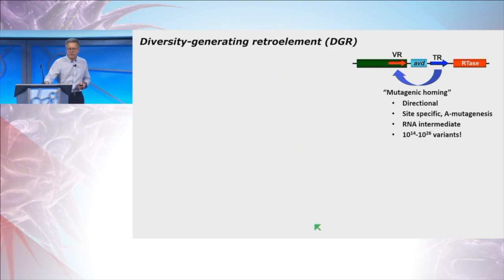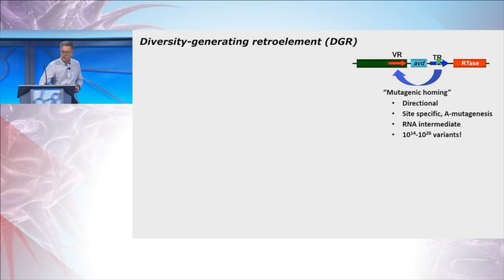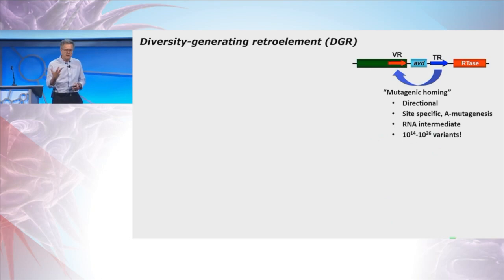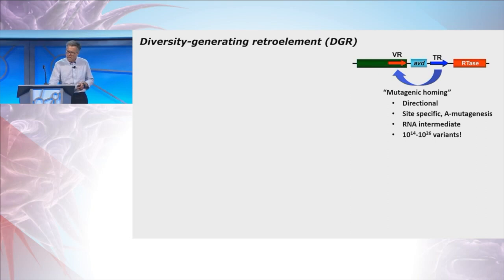We realized this is a reverse transcriptase-dependent, template-driven, adenine-specific mechanism for generating potentially vast amounts of diversity in protein coding sequences — a mechanism that had not been described before. We call these diversity-generating retroelements. Through a process we've named mutagenic homing, there is a directional transfer of information from an invariant template to a region of variability in a target protein. The variability is site-specific, occurring only at positions corresponding to adenines, with an RNA intermediate, and the diversity these systems can generate — up to 10^26 variants — is orders of magnitude greater than what the mammalian immune system can generate in making B-cell or T-cell receptors.